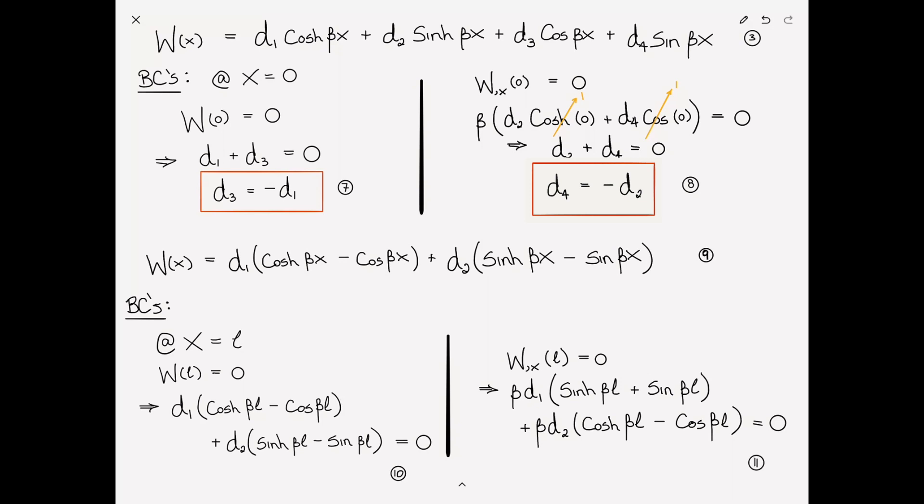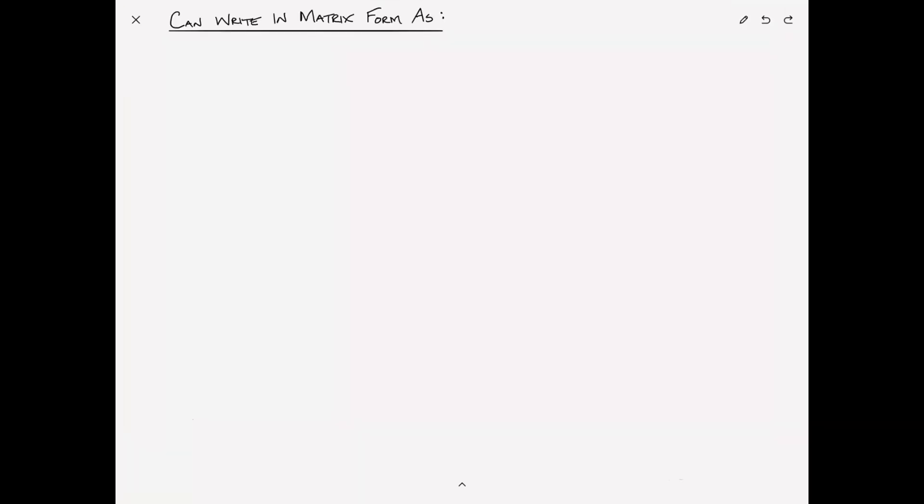So do you notice anything about this? Perhaps some of you can notice just by inspection that a solution is d1 and d2 are equal to zero, but that's kind of a meaningless solution. So here's what we're going to do. Let's turn the page and let's write this now in matrix form. If we write it in matrix form, we have a matrix of coefficients times d1 and d2 is equal to zero. So which one of you recognize this as the eigenvalue problem? Give yourself a point. This is exactly the eigenvalue problem. You're seeing it in a slightly different context now from what we've seen it before. But everything remains the same.